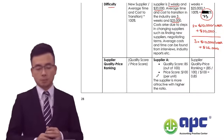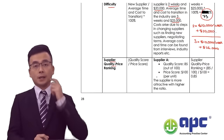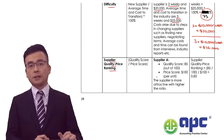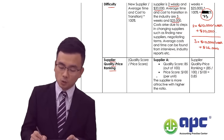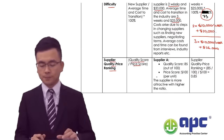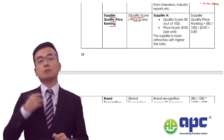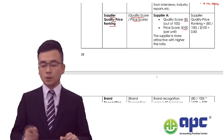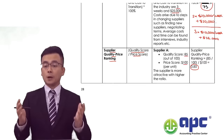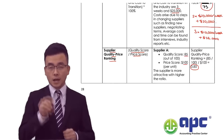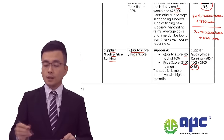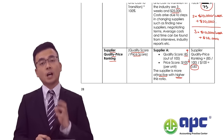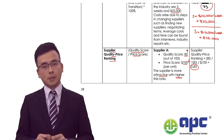Another KPI is the supplier quality-price ranking. We take the quality score and divide by the price score. For supplier A, quality rated 85 out of 100 at $100 per unit gives a ratio of 0.85. The higher this ratio, the more attractive the supplier — meaning higher quality at a lower price.